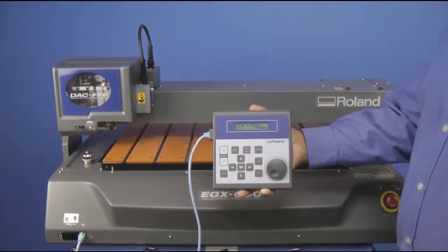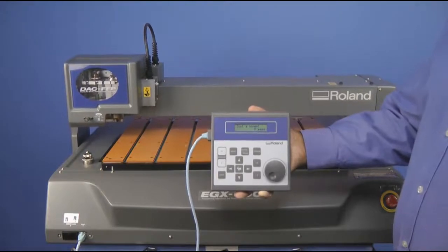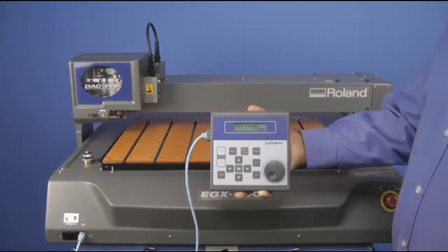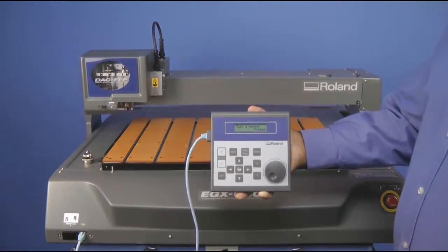Once the engraver is initialized, the display will be at the default menu, which shows your X, Y, Z position, and spindle speed.